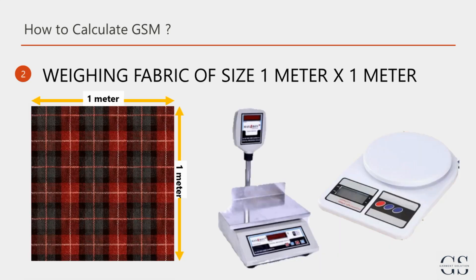The simplest approach is to take a fabric sample of 1 meter by 1 meter, weigh it, and voila, you have the GSM. This method is user-friendly and easy to grasp. You can also take other sizes like 2 meter by 0.5 meter, but that is not as straightforward and easy to understand as a fabric of 1 meter by 1 meter.